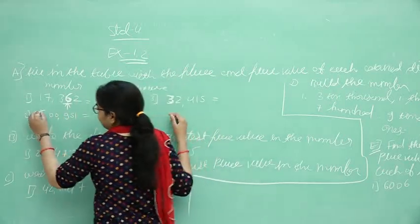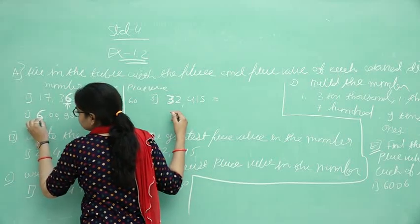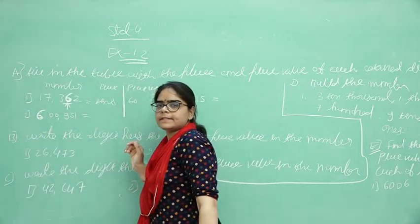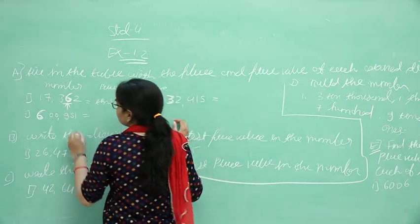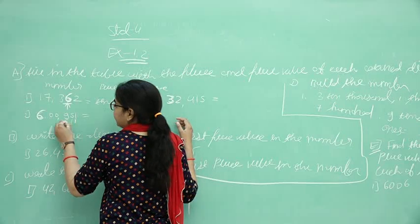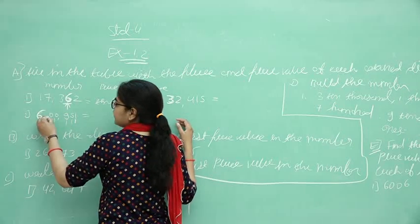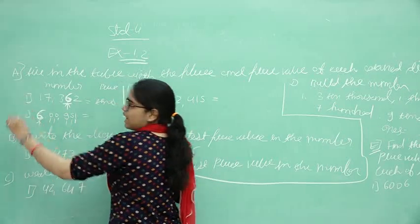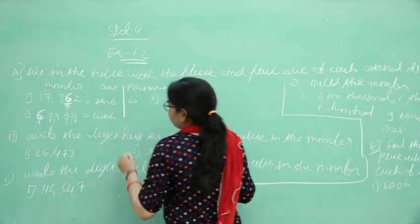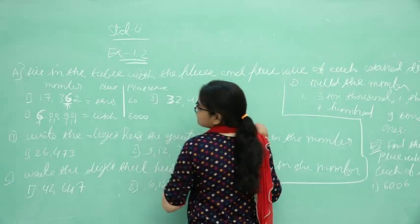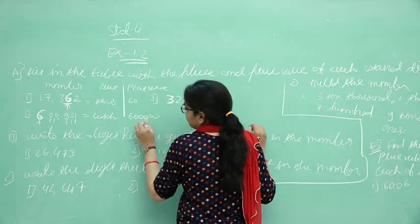After that, here colored digit is also 6. What is the place of 6? Please pay attention here: 1, 10, 100, 1000, 10,000, and lakh. Then place of 6 is lakh. And what is the place value of 6? 6 lakh.